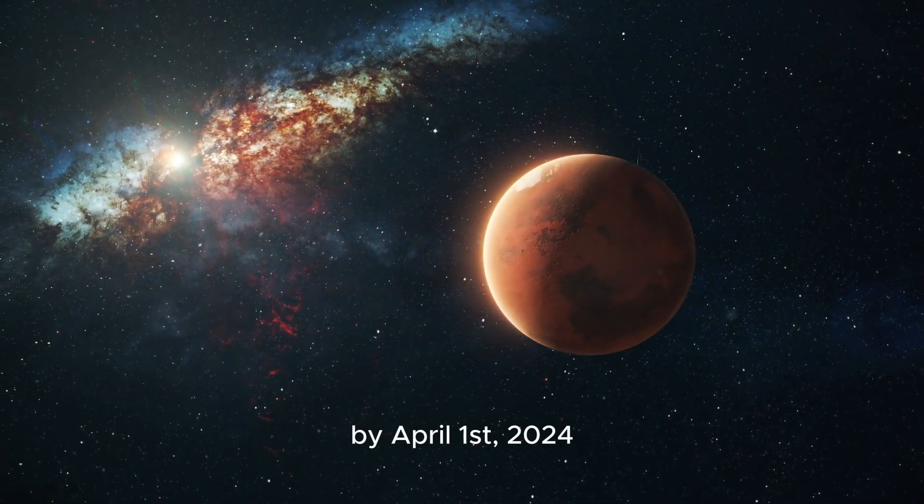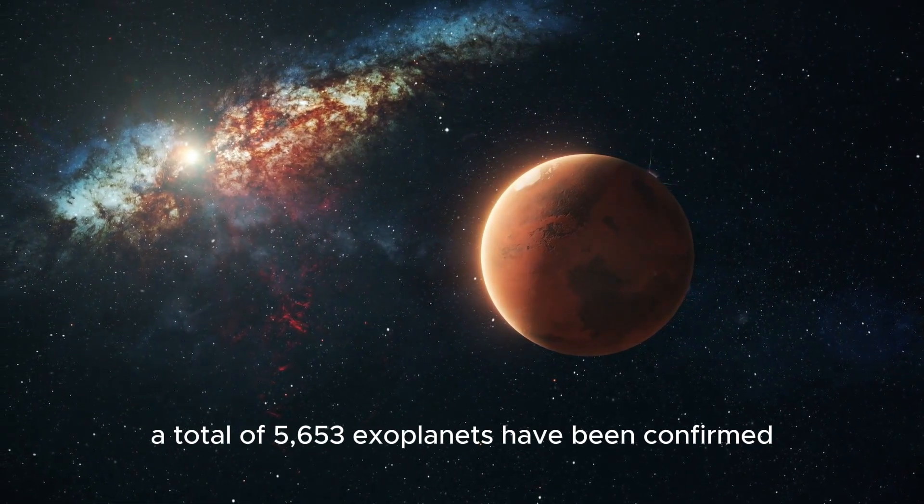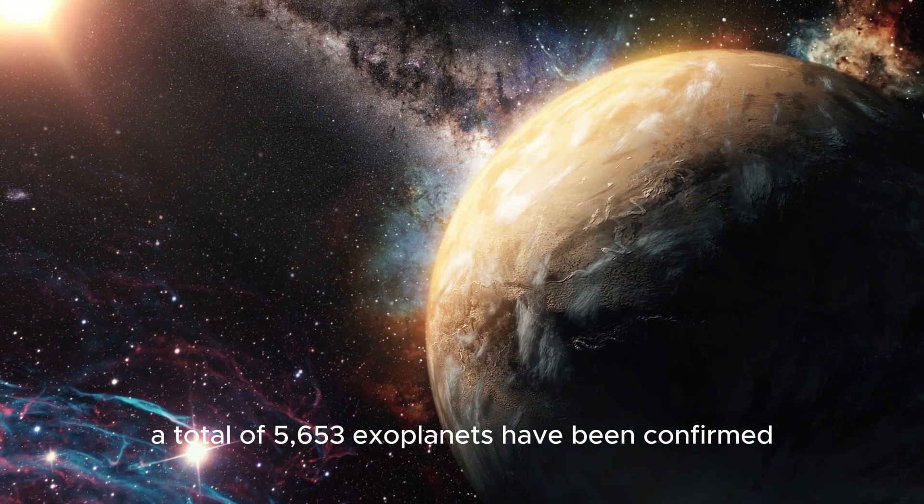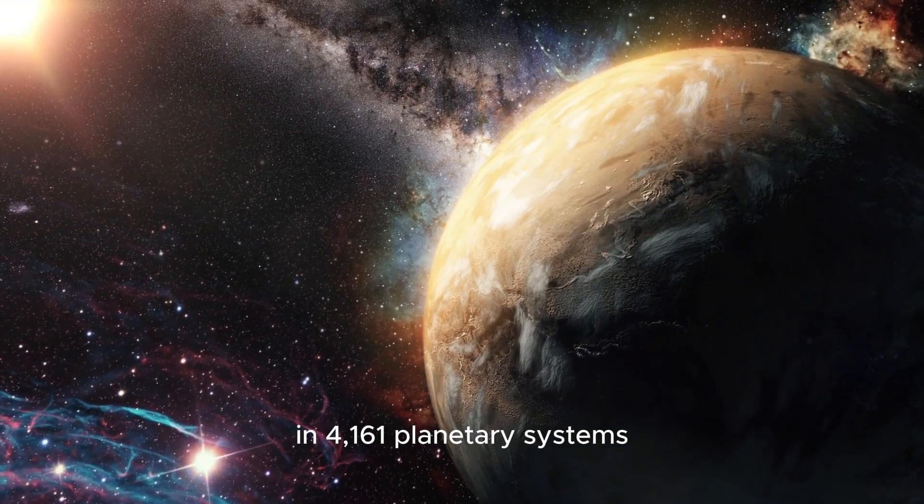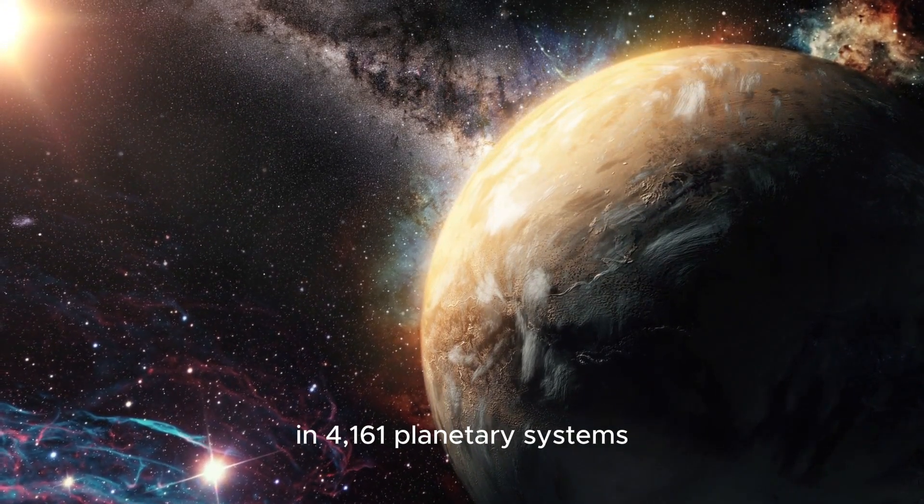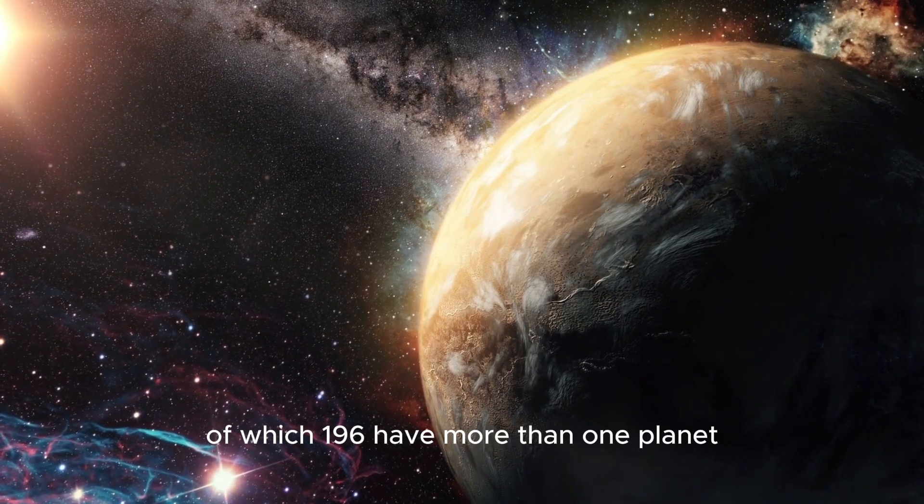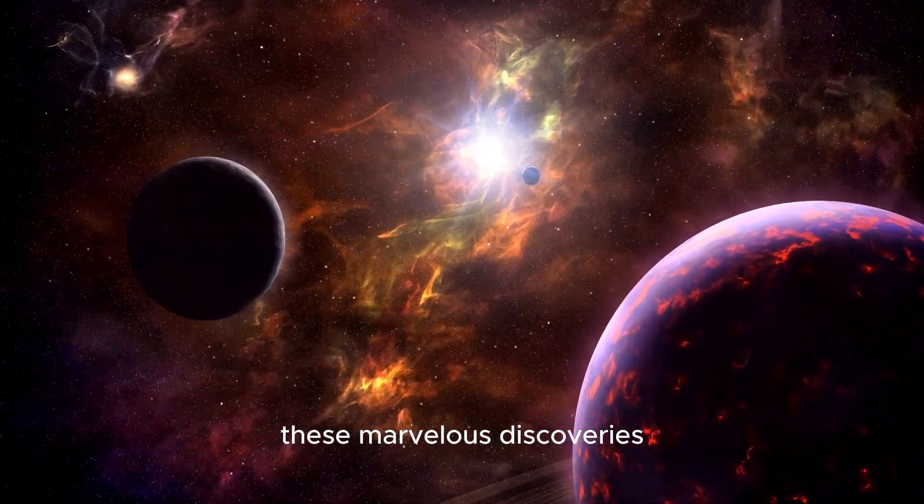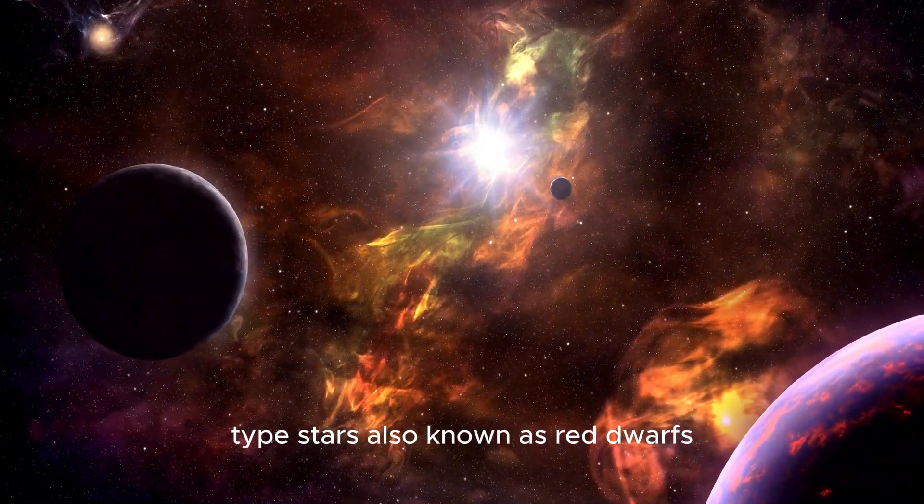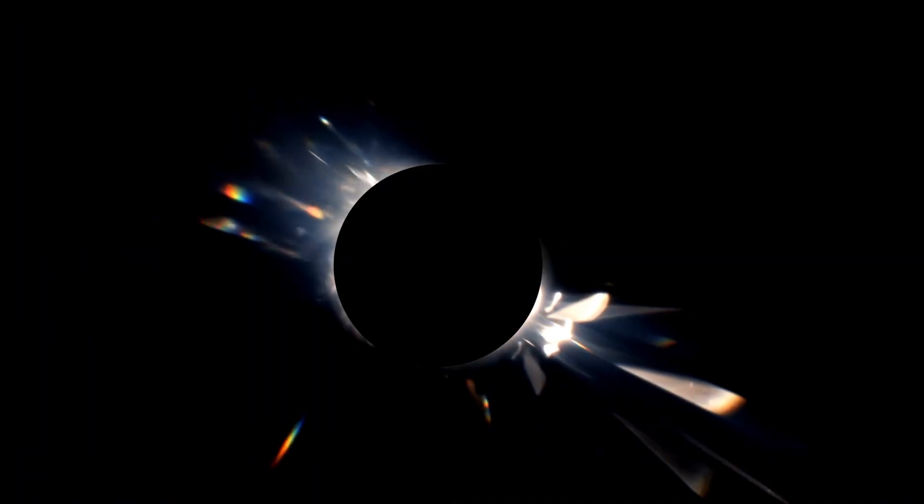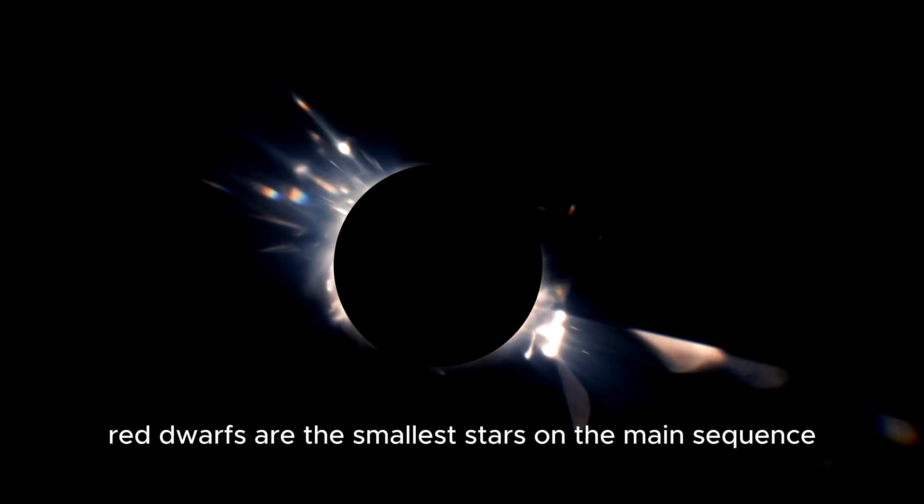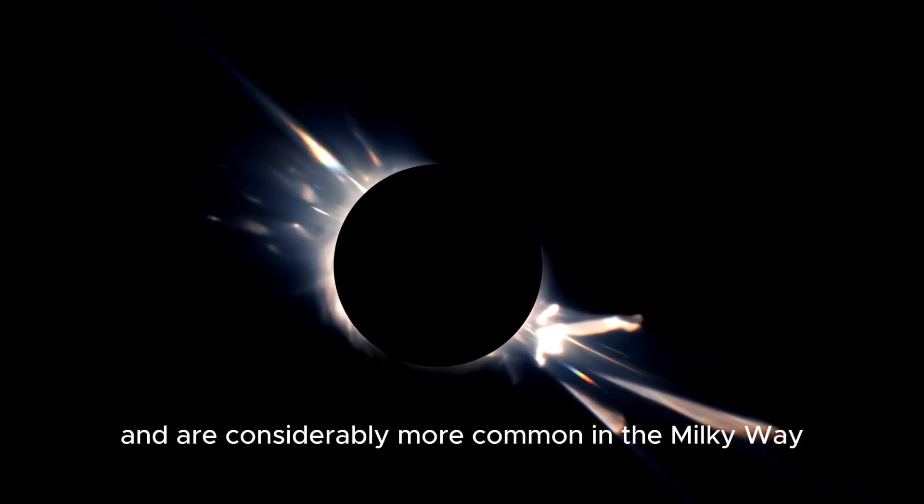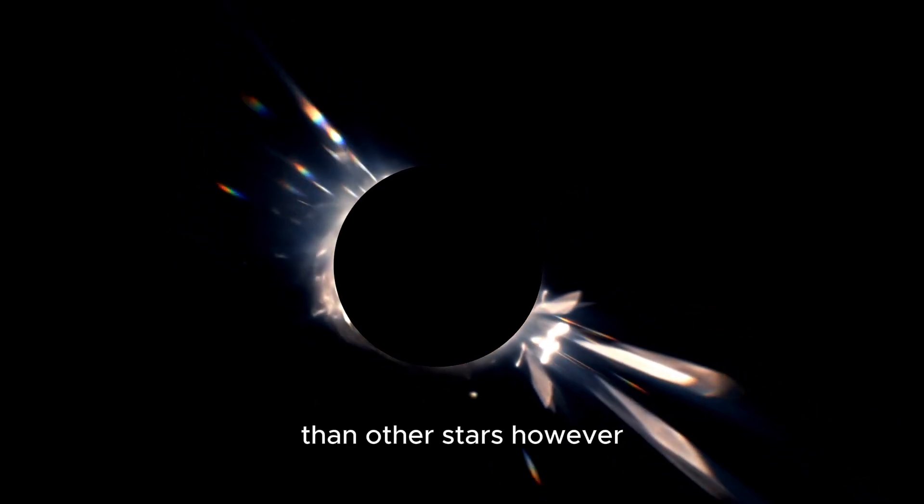By April 1st, 2024, a total of 5,653 exoplanets have been confirmed in 4,161 planetary systems, of which 196 have more than one planet. These marvelous discoveries are mostly associated with M-type stars, also known as red dwarfs. Red dwarfs are the smallest stars on the main sequence and are considerably more common in the Milky Way than other stars.